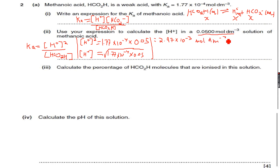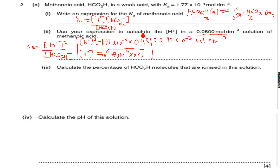If you see, the concentration of the acid was 0.05 but the concentration of H⁺ ions is so small. This shows you how weak this acid is, because only 2.97×10⁻³ mol/dm³ of the acid dissociated to give H⁺ ions.